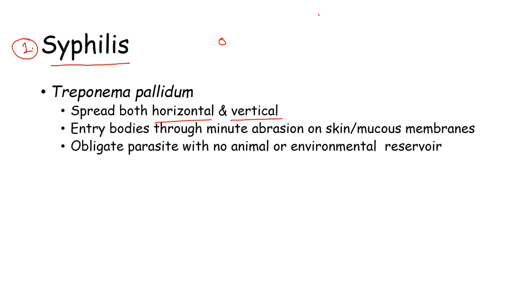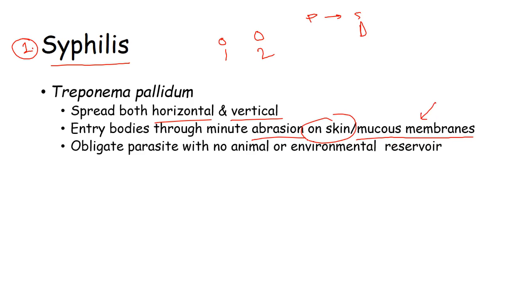Horizontal spreading means it can transfer from one person to the next person who are not related by blood links. Vertical transfer means from parent to the son or daughter. The entry into the body is through minute abrasions on the skin or mucous membranes, and mucous membranes are the prime regions through which all the STDs are caused.